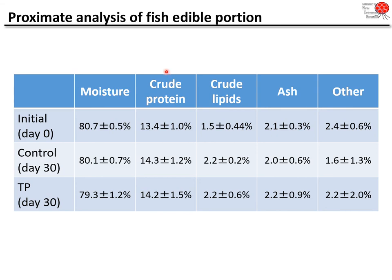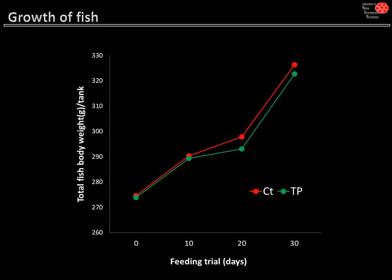Almost the same values were detected in both groups, meaning we successfully produced carp of equivalent meat quality. For fish growth performance, the total body weight increased over time as expected — we fed them every day. Between the control and TP groups, no significant difference in growth was found. This means that from the viewpoint of carp growth, complete replacement of fish meal with thraustochytrid protein is possible.